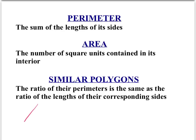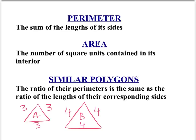So, just a quick example, if we have an equilateral triangle with all the sides that are 3, and we have another equilateral triangle where all the sides are 4 — we'll call this triangle A and triangle B — we know that the ratio of sides should be 3 to 4. The perimeter of triangle A is 3 plus 3 plus 3, which is 9. And the perimeter of triangle B is 4 plus 4 plus 4, which is 12.